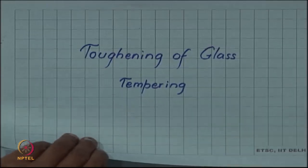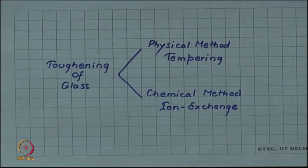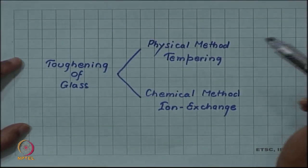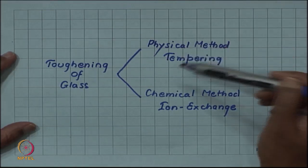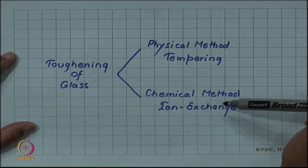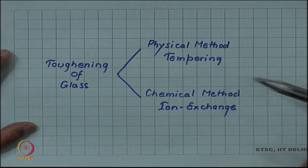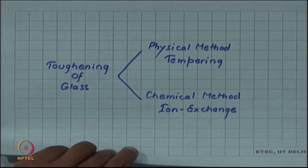Let us consider toughening of glass by a process called tempering. We have seen that toughening of glass can be done by a physical method called tempering or a chemical method by ion exchange. Currently we will discuss this tempering process.